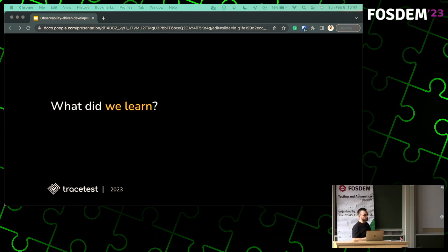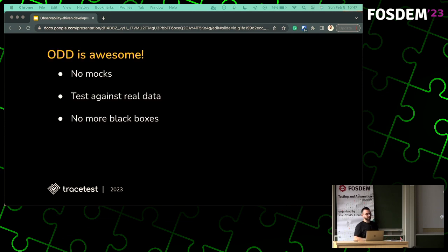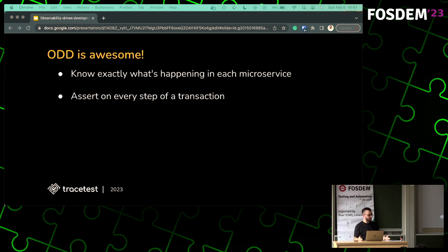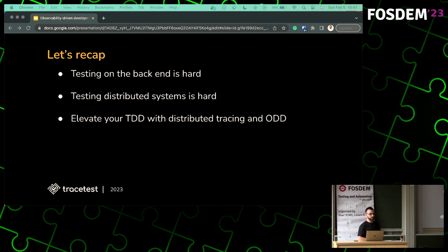Last recap — what did we learn today? ODD, or observability-driven development, is really awesome. You don't have to mock. You're testing against real data, you don't have any black boxes anymore. You know exactly what's happening in every single microservice. You can assert on every step of the transaction. You wouldn't be here if you thought testing was fun or easy. It is hard — testing distributed systems is even harder, testing microservices even harder. I want to help you elevate that TDD process you're already doing well to also doing ODD.